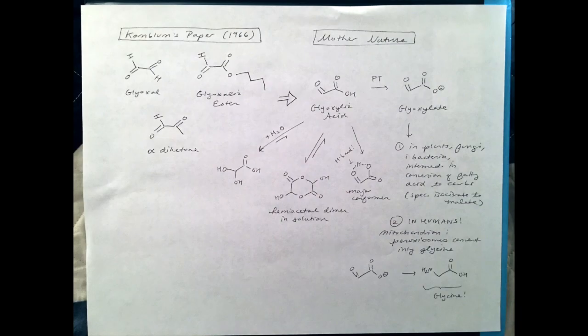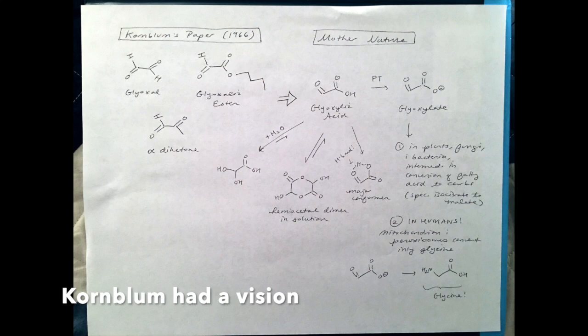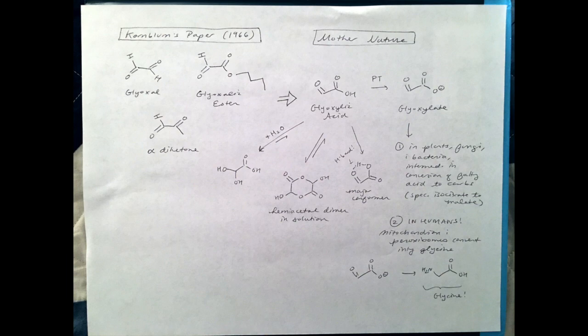So while the Kornblum reaction is best known today for turning alkyl halides into aldehydes, what Kornblum actually envisioned when he wrote his paper was that amines would be turned into glyoxyl, glyoxalic ester, and alpha-diketones. Now I have all of these molecules represented here, and they all look fairly similar. And it seems kind of interesting that you will be able to create these compounds. However, what's more interesting is what you can then turn those compounds into and the use they have in nature.